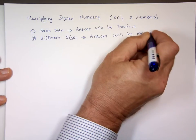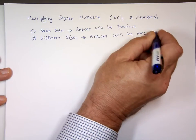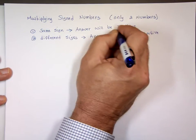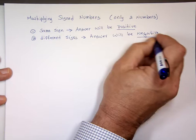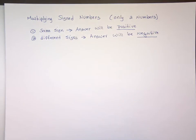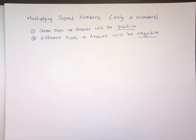So same sign, the result is positive. Different signs, the result is negative. And that's the only rule we have to worry about. This rule is also used for multiplying and dividing.